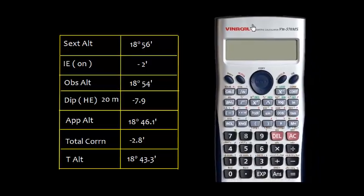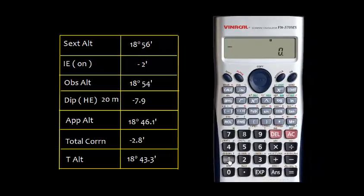Well, if you would like to use the calculator, this is pretty easy. Just use this way: 18° 56', again you put degree, minus 0° 02', you get this value. Then again minus 0° 7.9', then again you get 18° 46.1'. Actually, this is 6 seconds, so that becomes 0.1 minute.